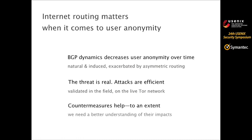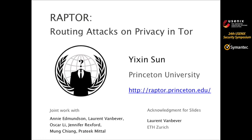In summary, internet routing matters when it comes to user anonymity. BGP dynamics decreases user anonymity over time. The threat is real and attacks are efficient, as we demonstrated in our real-world experiments. Countermeasures help, but only to an extent — it is not trivial to build a countermeasure against such attacks. Thank you all for coming to my talk. I will take questions now.